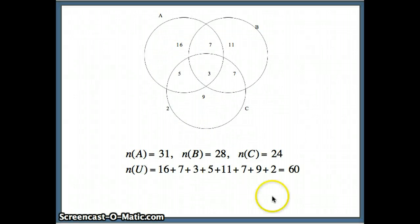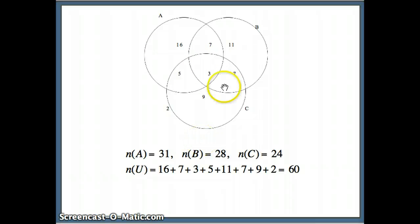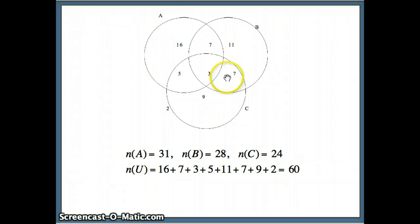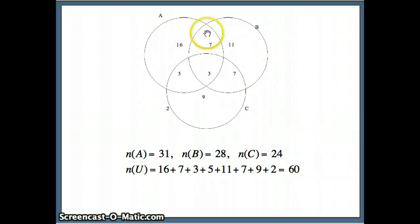Looking at the numbers: the number of items in A is 16 plus 7 plus 3 plus 5, giving 31. Number of items in B: 11 plus 7 plus 3 plus 7, giving 28. Number of items in C: 7 plus 3 plus 5 plus 9, giving 24. And the number in the universal set — adding all eight numbers — is 60.